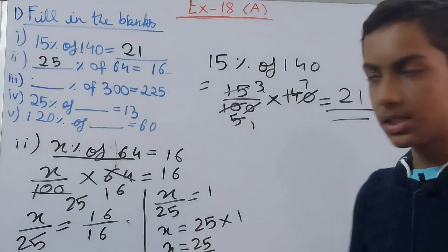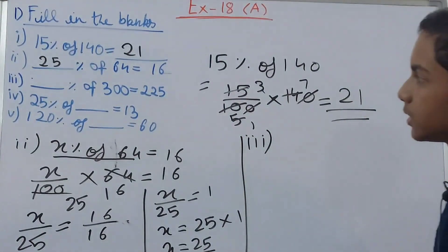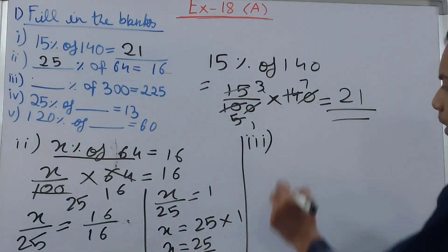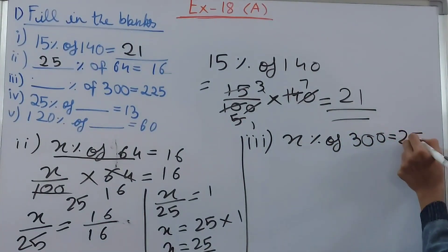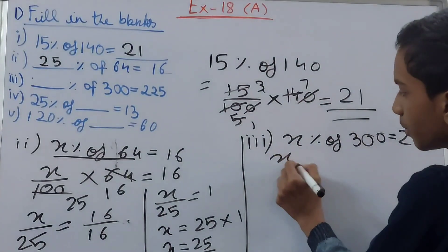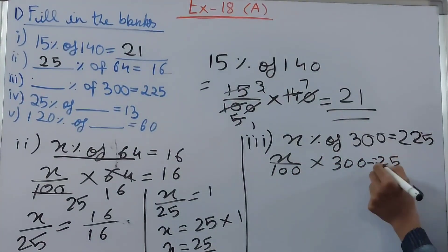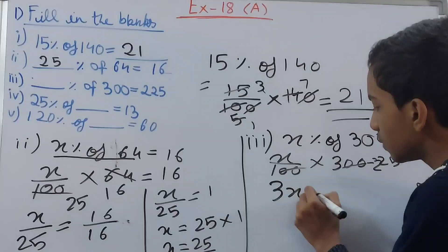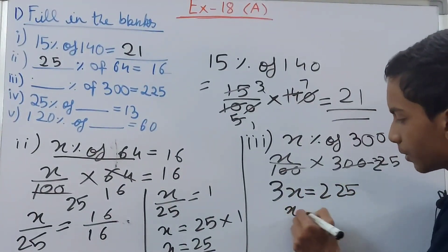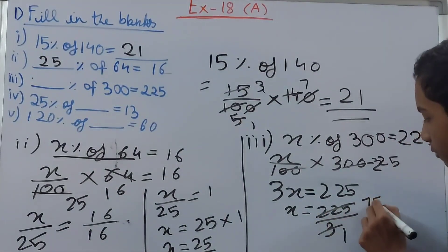Third part: blank% of 300 = 225. Assume the percent is x. So x/100 × 300 = 225. Cancel the zeros: x × 3 = 225, meaning 3x = 225. Therefore x = 225/3 = 75. So 75% of 300 equals 225.